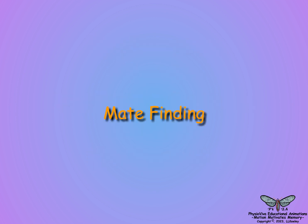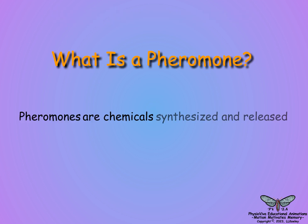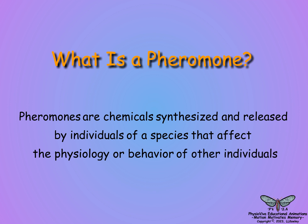Insect reproduction begins with mate finding. Receptive females attract males by releasing pheromones. What is a pheromone? Pheromones are chemicals synthesized and released by individuals of a species that affect the physiology or behavior of other individuals of the same species.